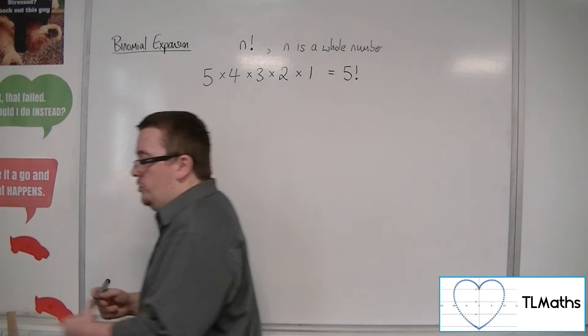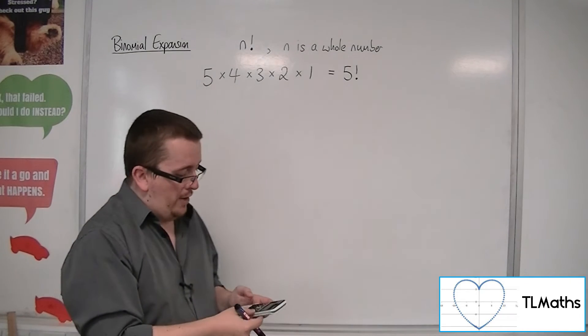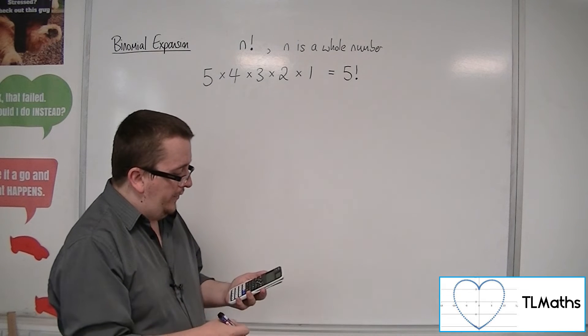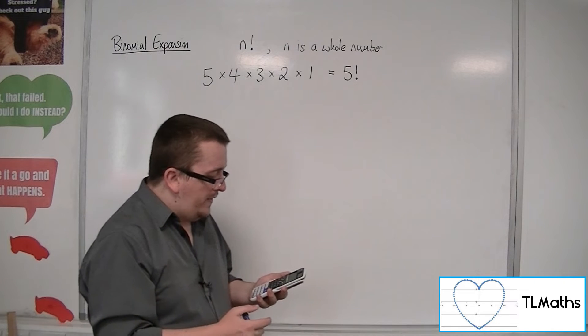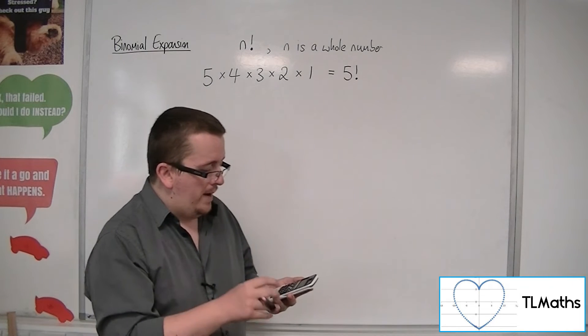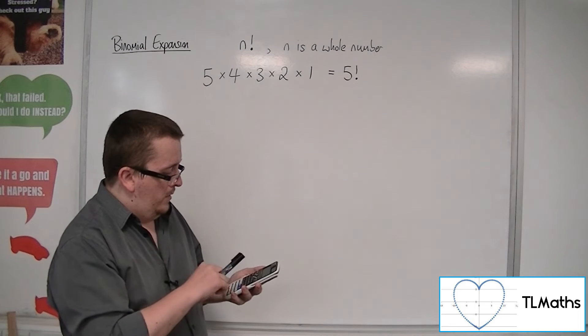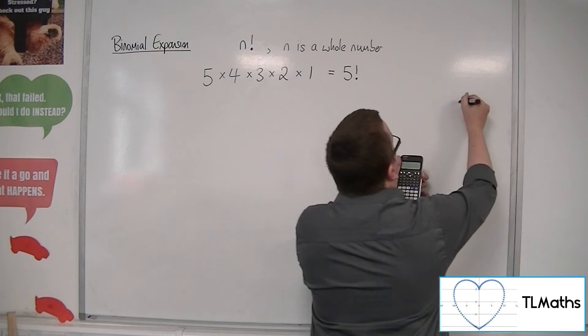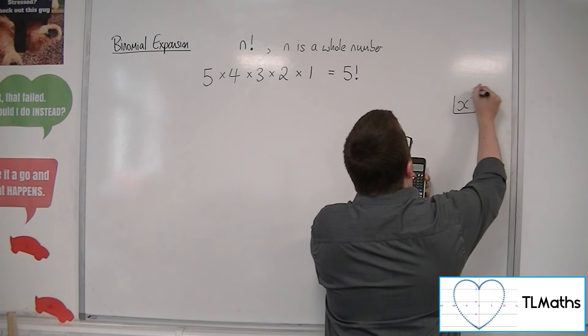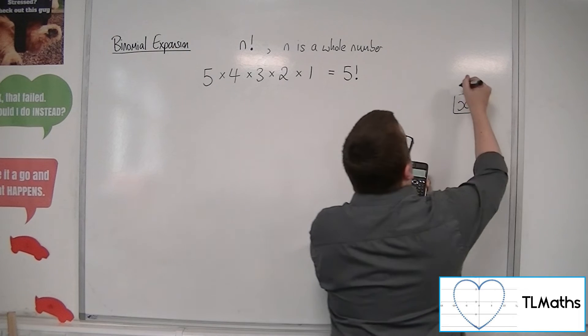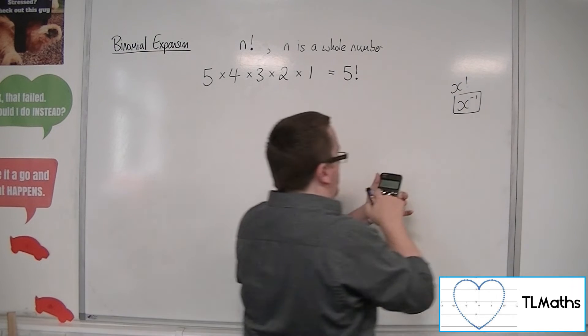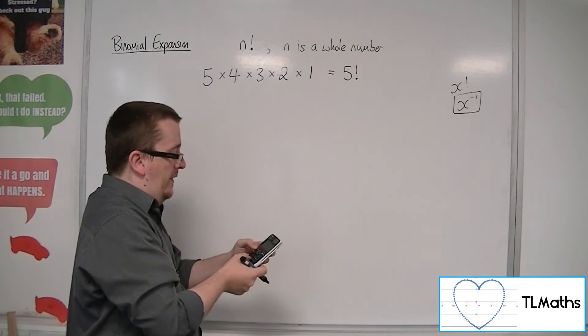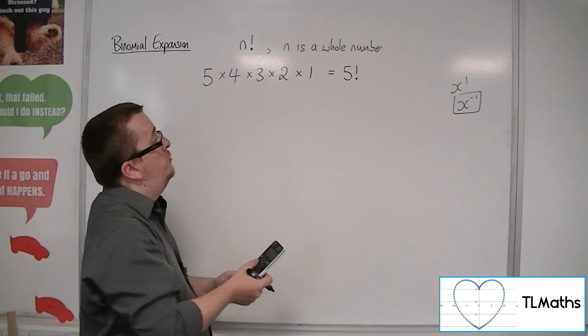Now you should find a factorial button on your calculator. On the Casio ClassWiz, there is the factorial button above the x to the minus one button. So where your x to the minus one button is, just above that is the x factorial. So you've got to go shift and then press that x to the minus one button, you'll get your factorial button.